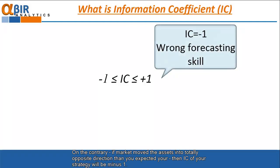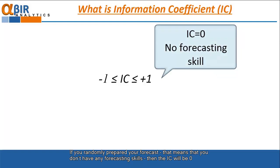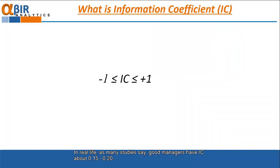On the contrary, if market moved the assets into totally opposite direction than you expected, then IC of your strategy will be minus 1. If you randomly prepared your forecast, that means that you don't have any forecasting skills, then the IC will be zero.